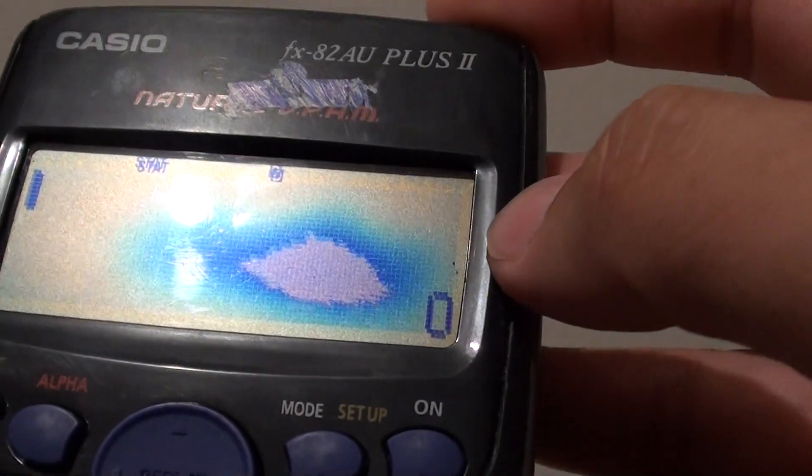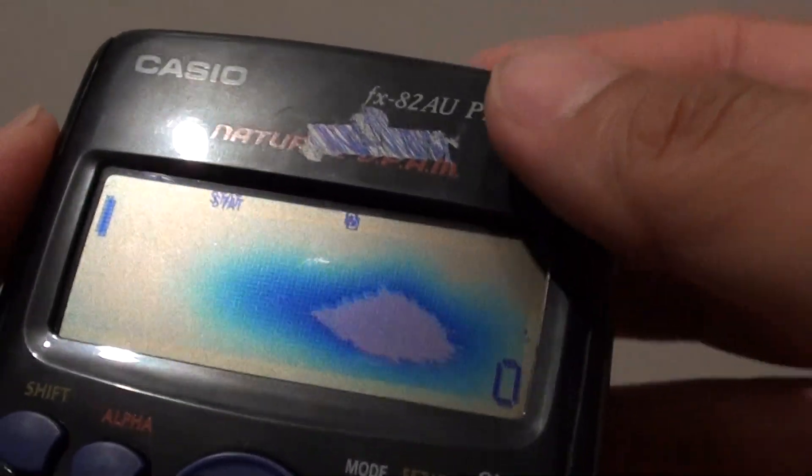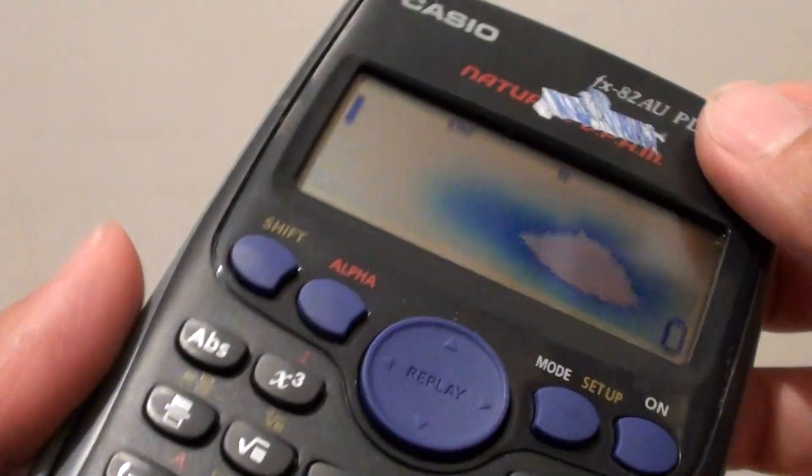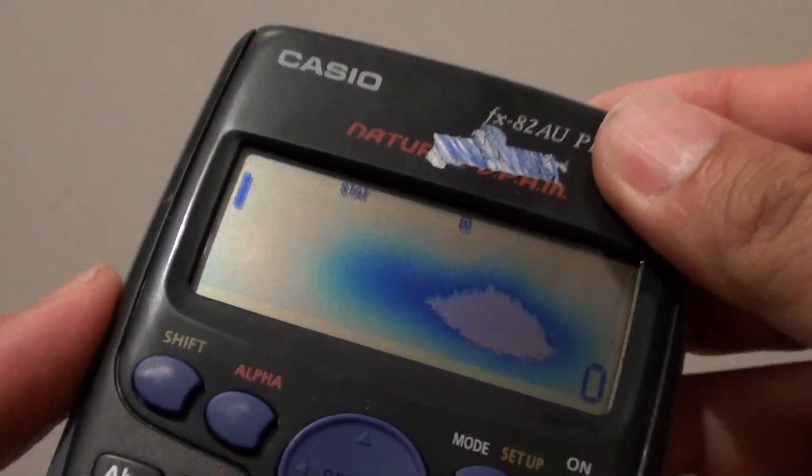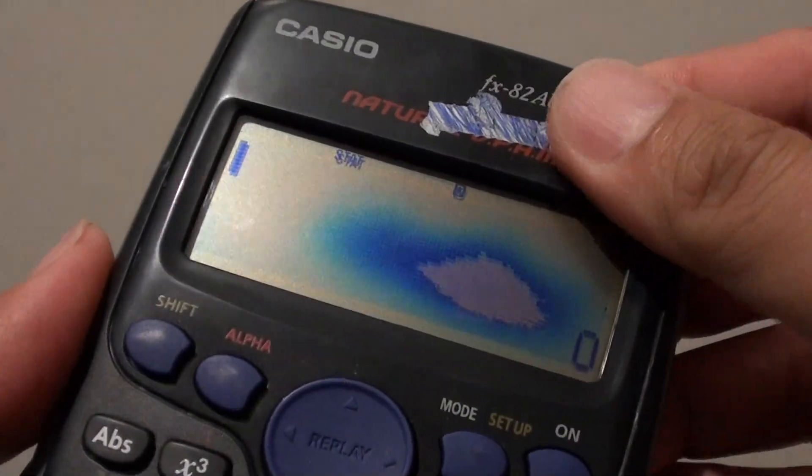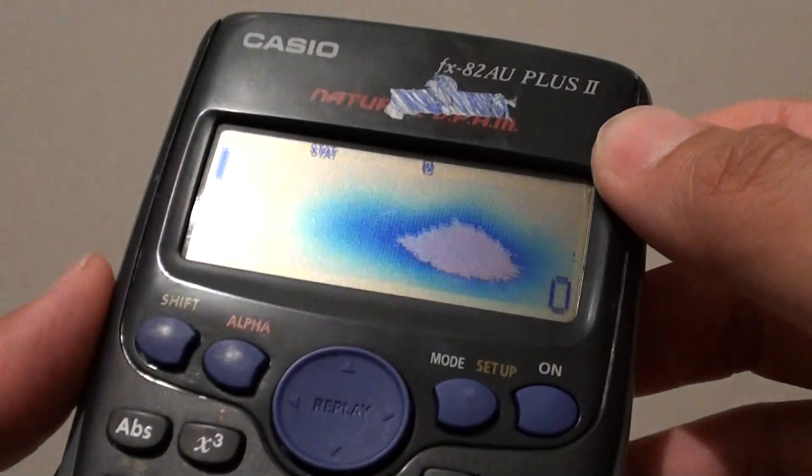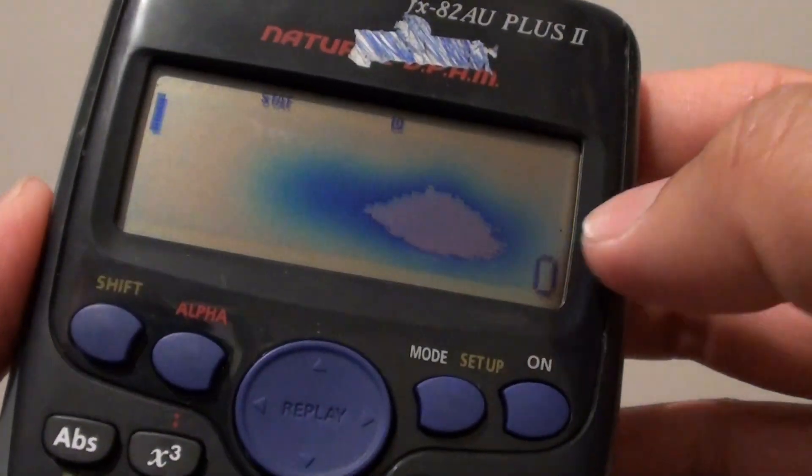And it is not really worth getting it fixed nowadays because the calculator is really cheap. You can get this one for $20 to $30 depending on where you are. This is a scientific calculator. It's fairly cheap, so it's not really worth thinking about fixing it.